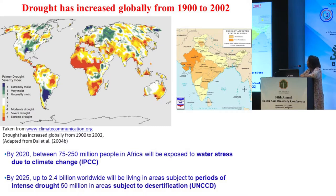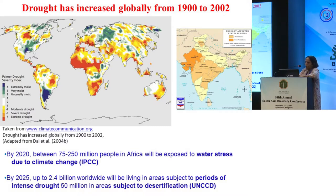Traditionally, large parts of Africa and to some extent Asia are affected very much by drought. By 2020 it was expected that about 75 to 250 million people would be exposed to water stress due to climate change, and by 2025 up to 2.4 billion will be living in areas subject to periods of intense drought, and 50 million in areas subject to desertification. So drought tolerance is a very major problem, and if synthetic biology can address that, it would be a very useful and major contribution.